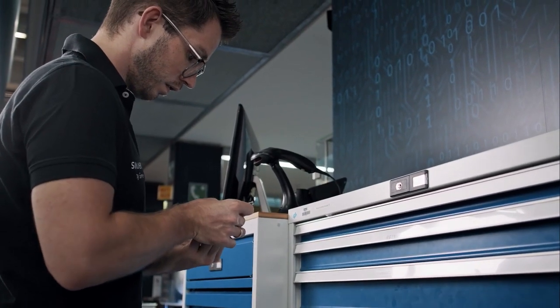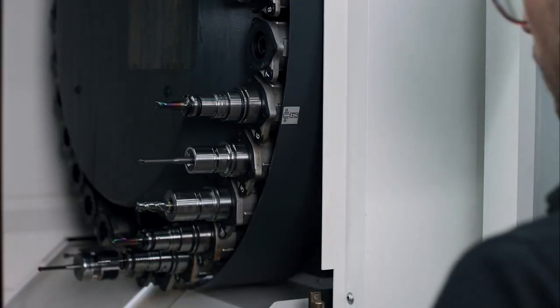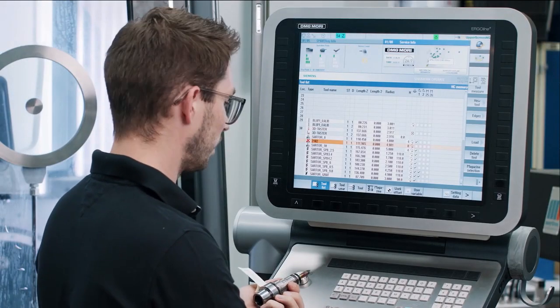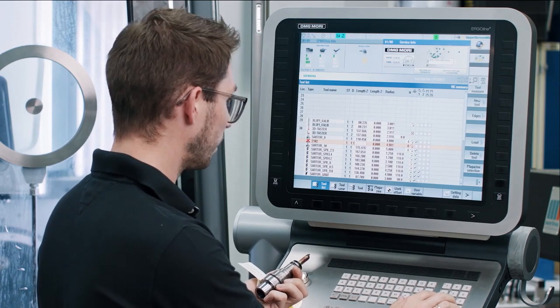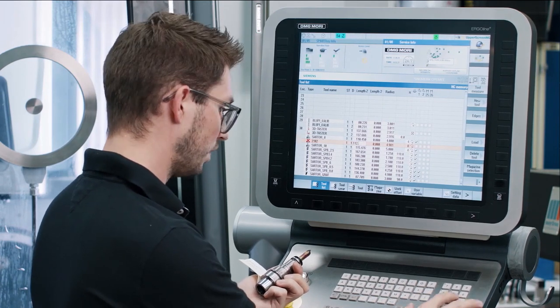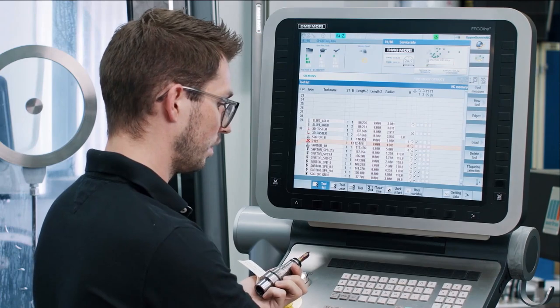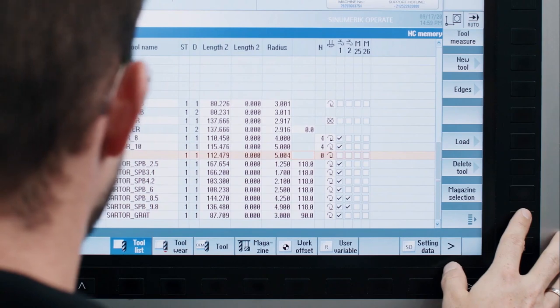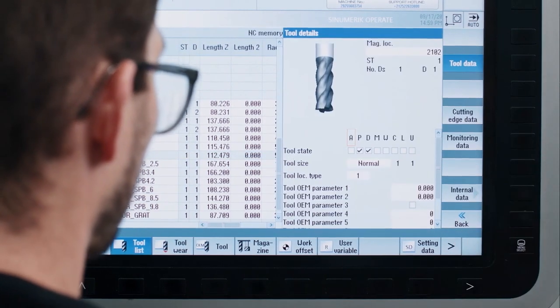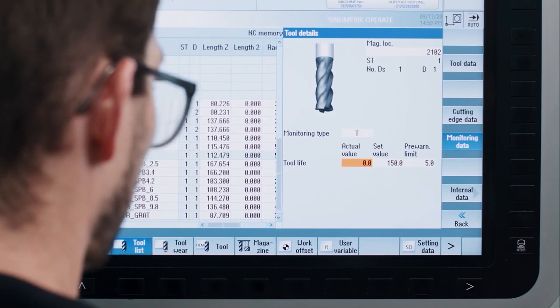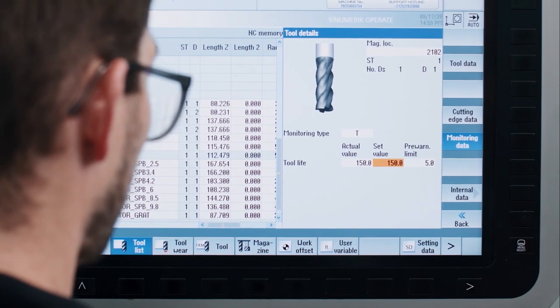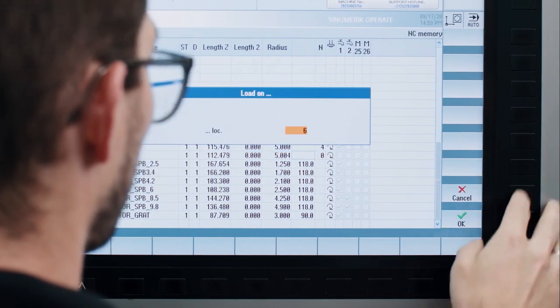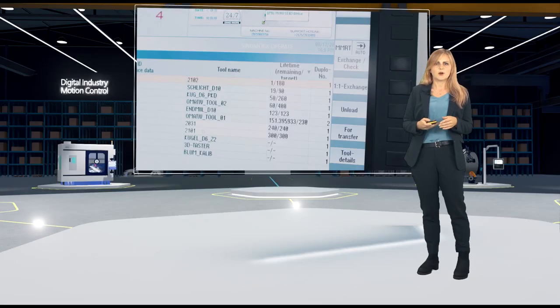Let's now assume that one tool is worn out and needs to be replaced. The machine operator has taken a sister tool and now goes to the machine to replace the worn tool. To do this, he first selects the tool on the HMI, then he goes to the door, removes the tool from the machine. The new tool, the new tool's correction data must then also be entered manually into the control system. Afterwards, he starts the loading process for the new tool.